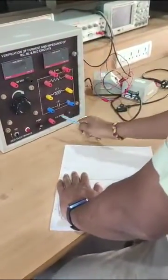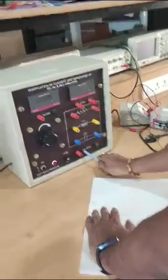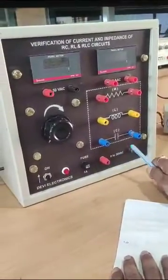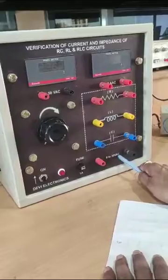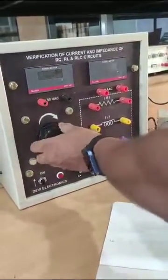In this case, we can see these two are the voltage sources, 0 to 30 volts, and this voltage is AC. This can be varied by using this knob.